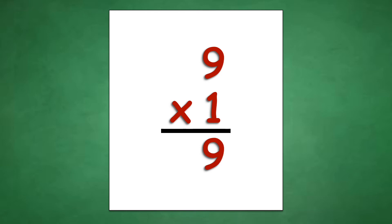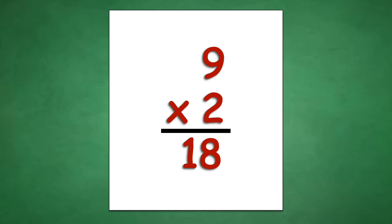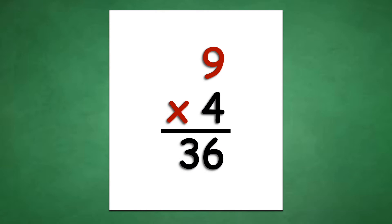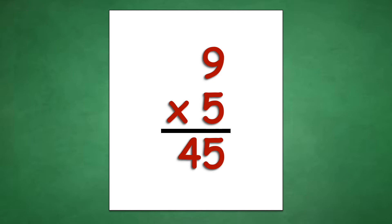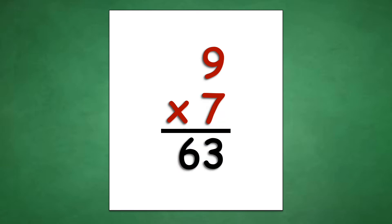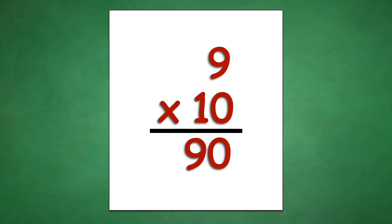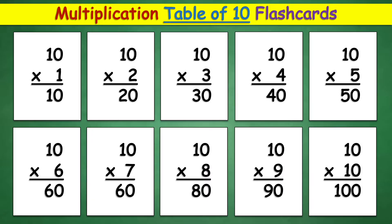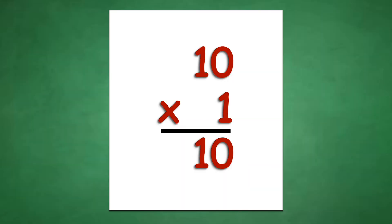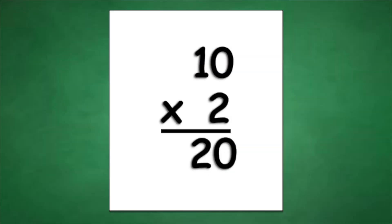Table of 9: 9 times 1 equals 9, 9 times 2 equals 18, 9 times 3 equals 27, 9 times 4 equals 36, 9 times 5 equals 45, 9 times 6 equals 54, 9 times 7 equals 63, 9 times 8 equals 72, 9 times 9 equals 81, 9 times 10 equals 90.